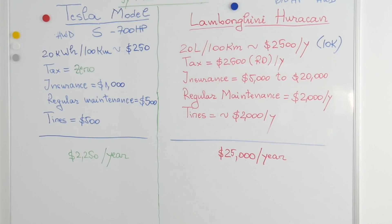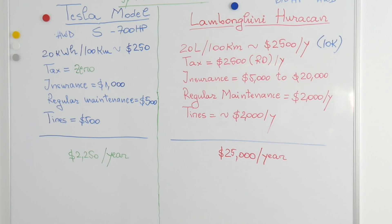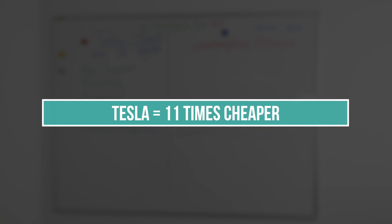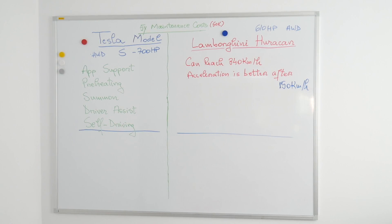The Huracan needs around $25,000 per year, which includes maintenance, fuel, taxes and insurance, whereas the Model S needs just $2200. It's just 11 times cheaper to drive a Model S than a Huracan, and guess what? Zero emissions.